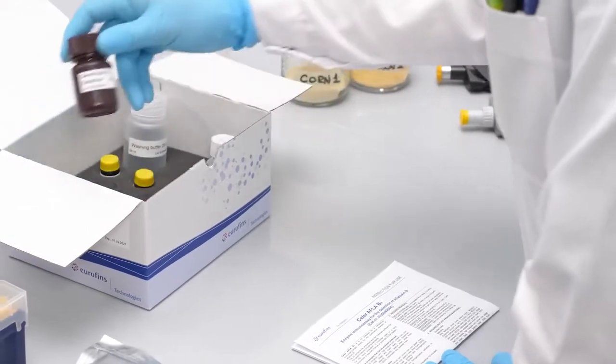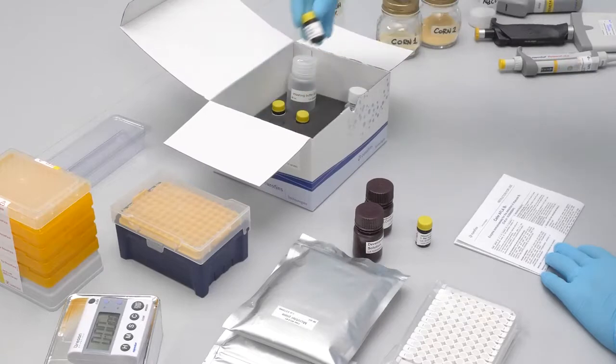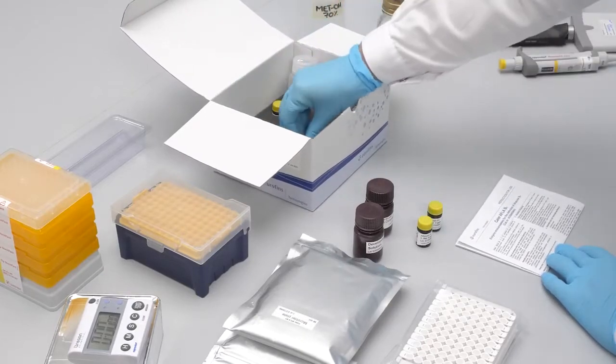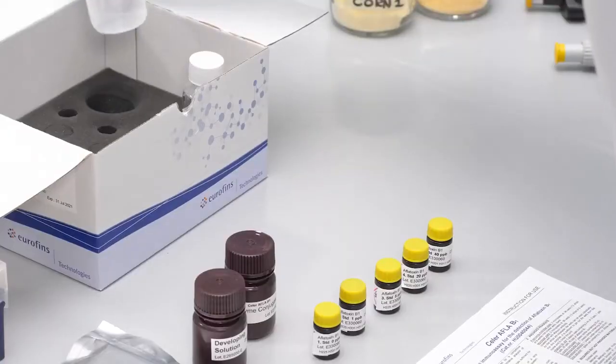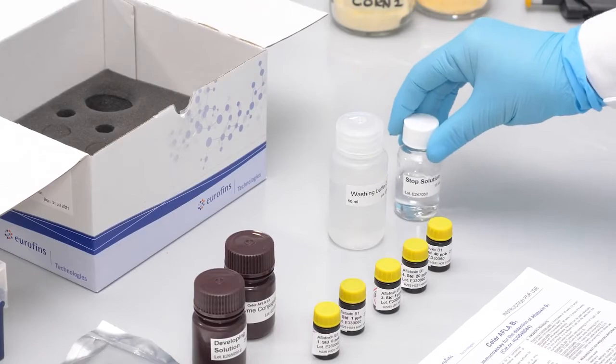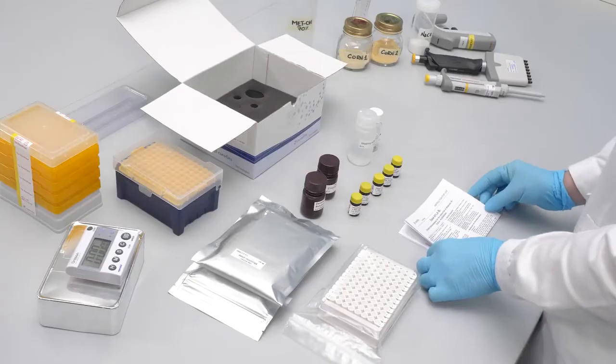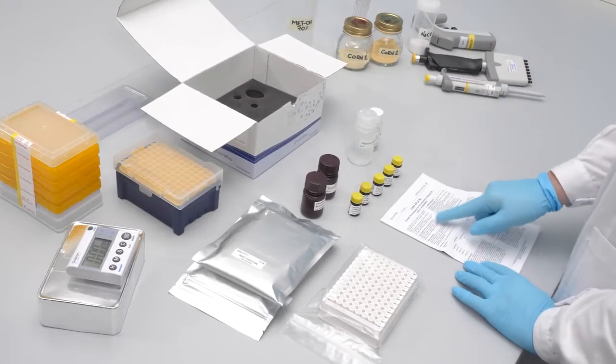The test kit has been validated for the analysis of maize, high moisture maize, sorghum, brown rice, mash, corn gluten meal, silages, feed, hazelnuts, pistachios, peanuts, almonds, raisins, figs, DDGS, cottonseed, soy and soybean meal.